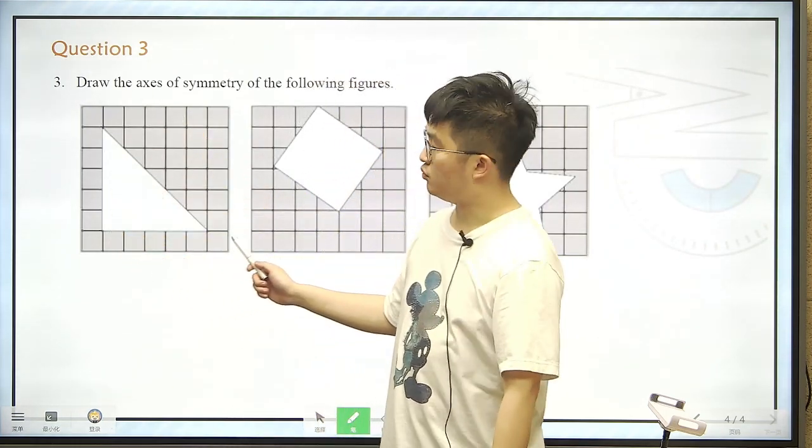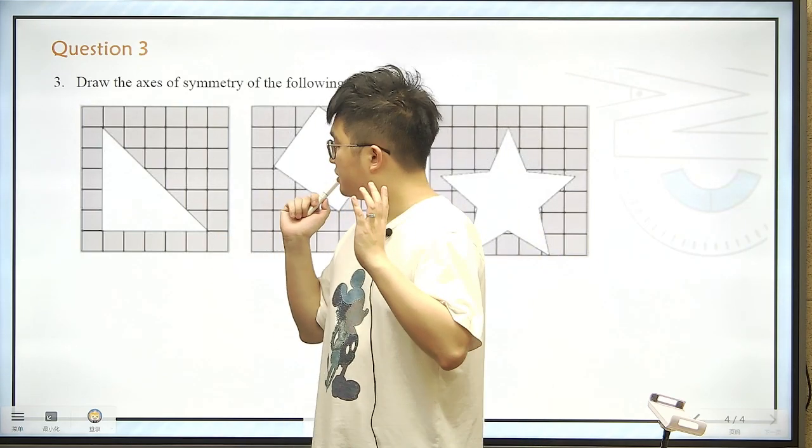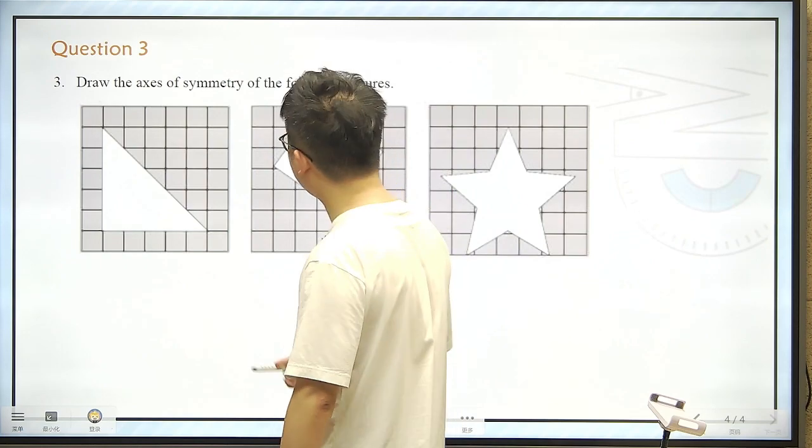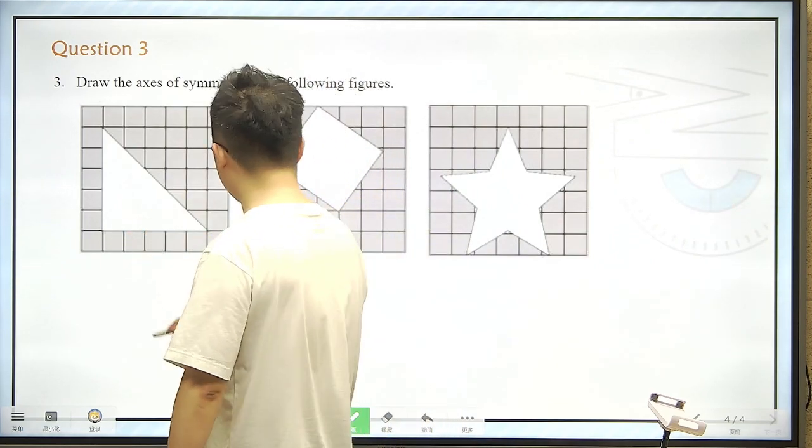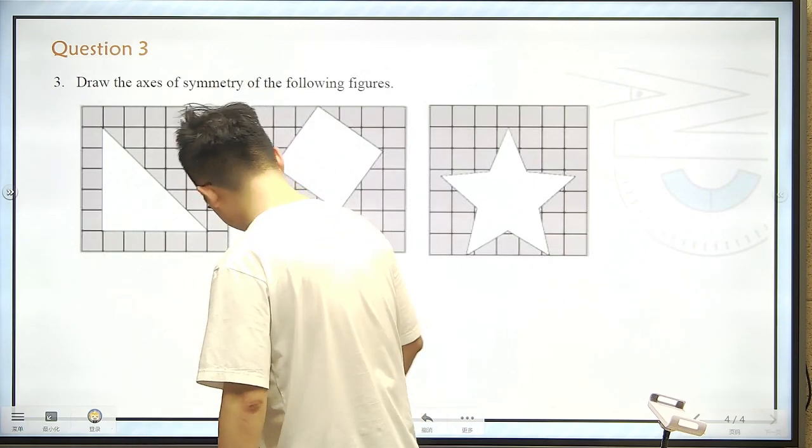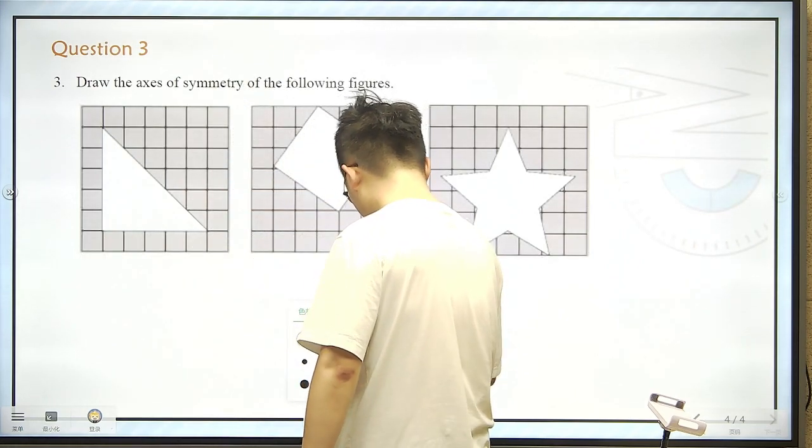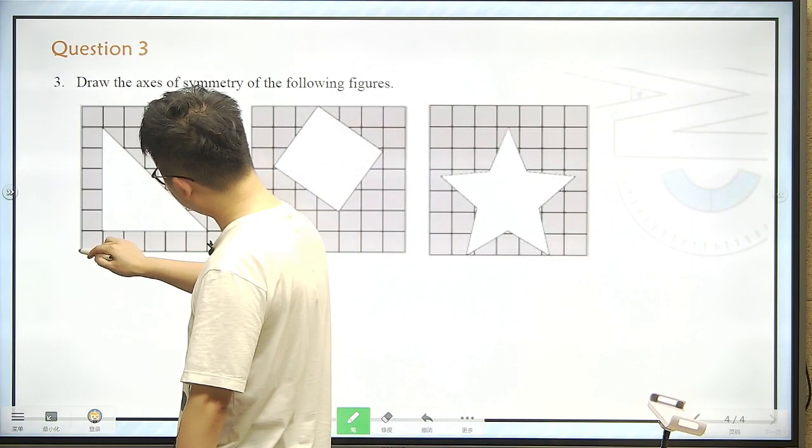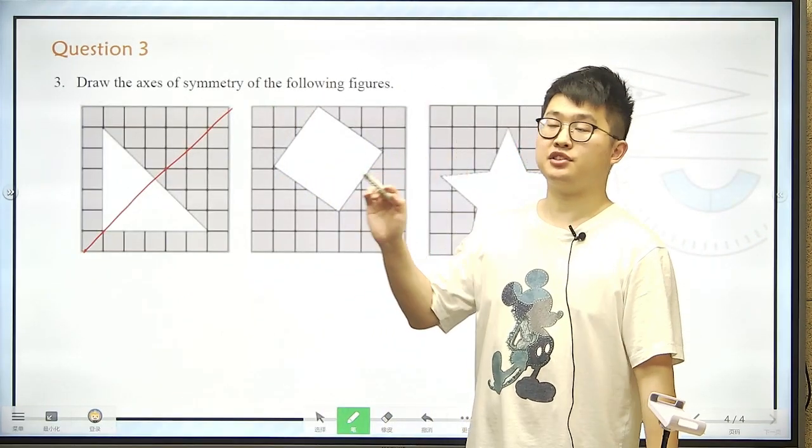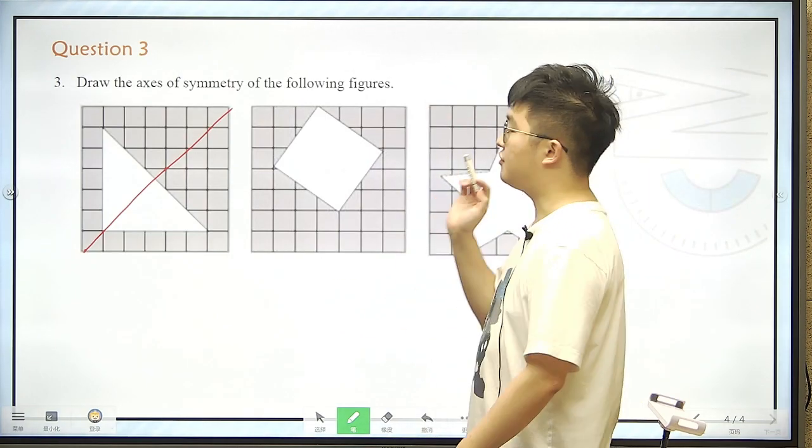We need to draw the axis of symmetry of the following figures. So the most important thing here is pay attention when there are more than one axis that satisfy this need. First one is what we call a right triangle. We have only one axis of symmetry here. That would be, let's do this with a red pen. And it should be like this. This is the axis of symmetry.